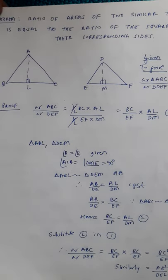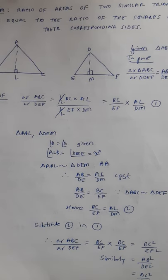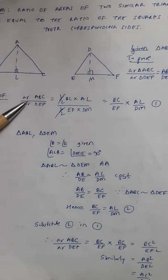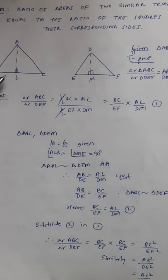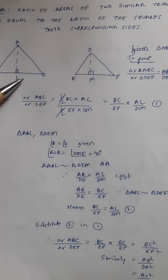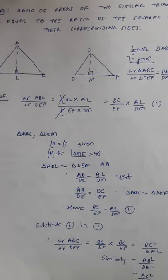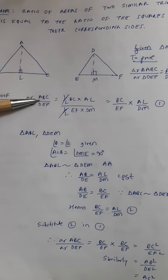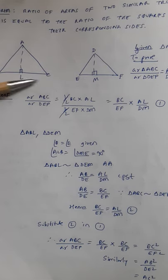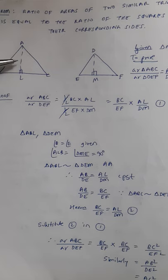We have to prove one of them, and then we can say similarly it is true for all. We are comparing the areas of the two triangles ABC and triangle DEF. Area of a triangle we know is half base into height. So for construction, we are drawing AL perpendicular to BC and DM perpendicular to EF.